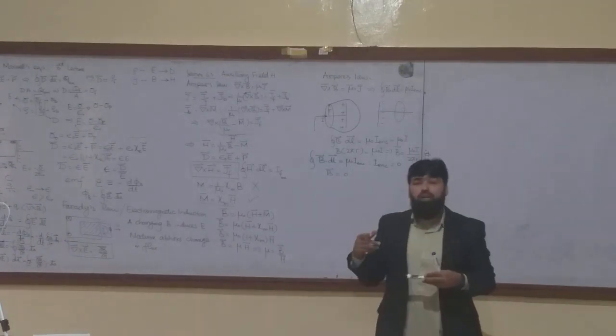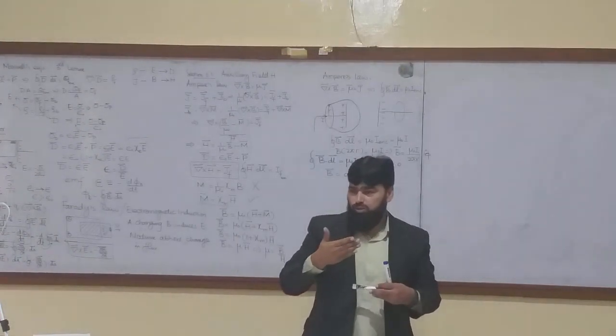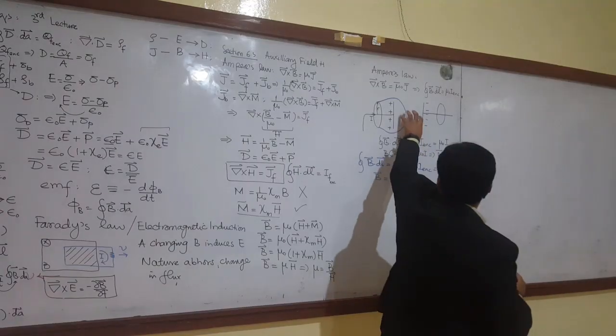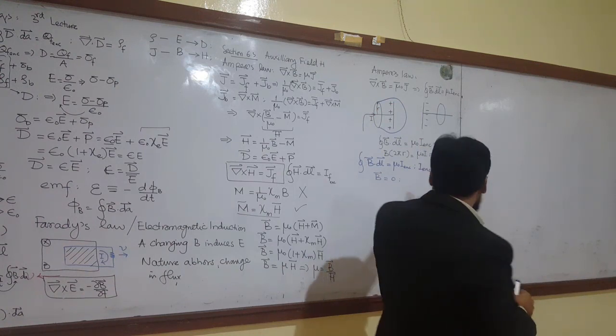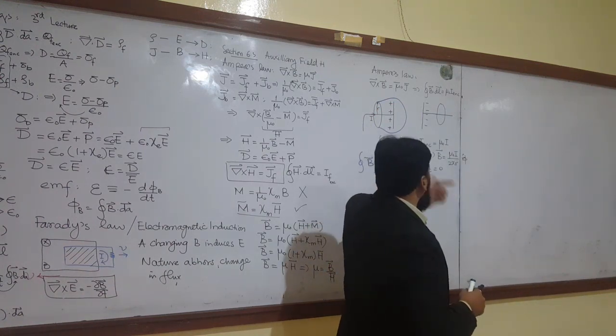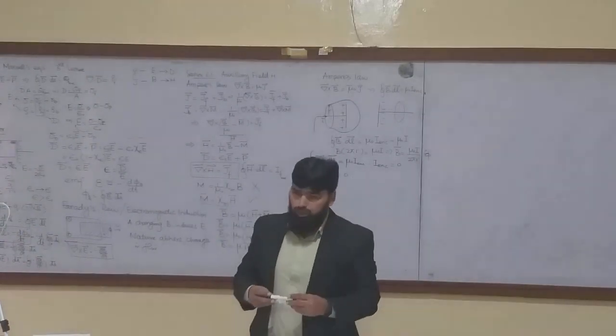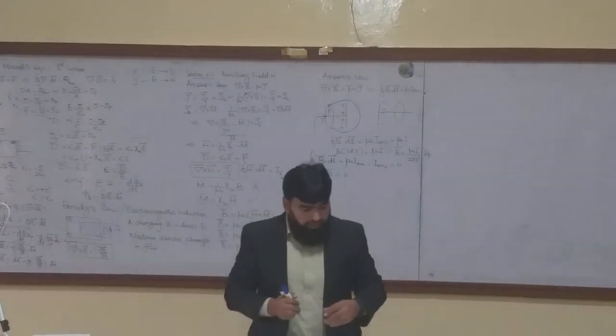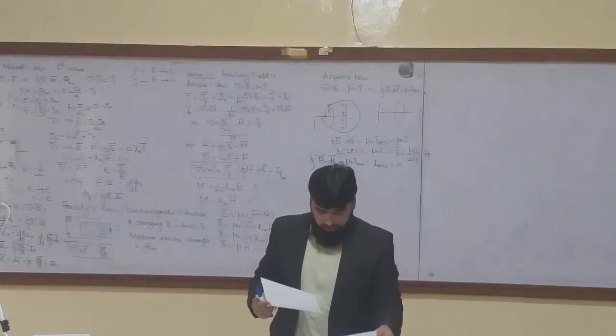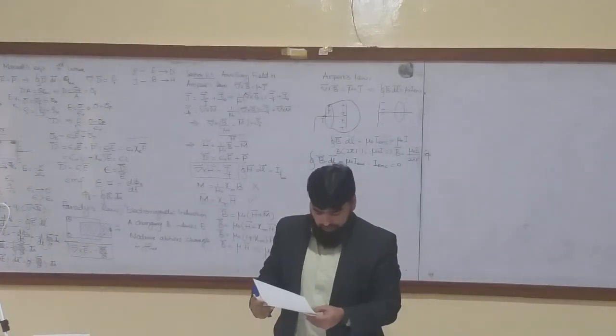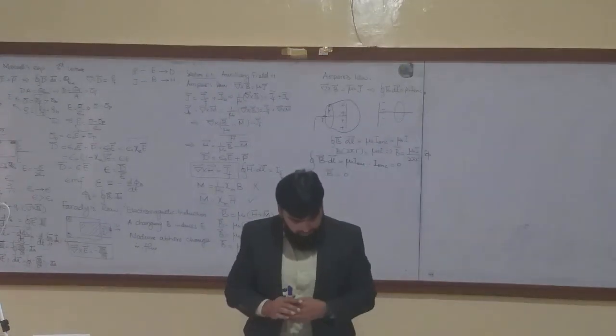Ampere's law fails here. Ampere's law cannot account for this current flow. Because it is enclosing, this surface is enclosing no current. This side is there, but this side comes out to be 0. So B comes out to be 0 here. And we will have to study something like this.